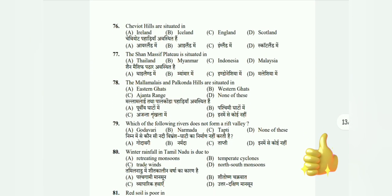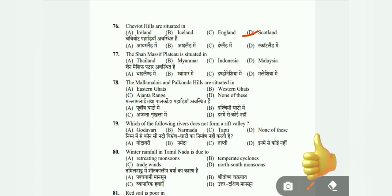Question 76: Cheviot Hills are situated in Ireland, Iceland, England, or Scotland? The correct answer is Scotland. Question 77: The Shaha Massive flat is situated in Thailand, Myanmar, Indonesia, or Malaysia? The answer is B, Myanmar. Question 78: The Malamalis and the Palkonda hills are situated in Eastern Ghats, Western Ghats, Ajanta range, or none of these? The correct answer is A, Eastern Ghats.